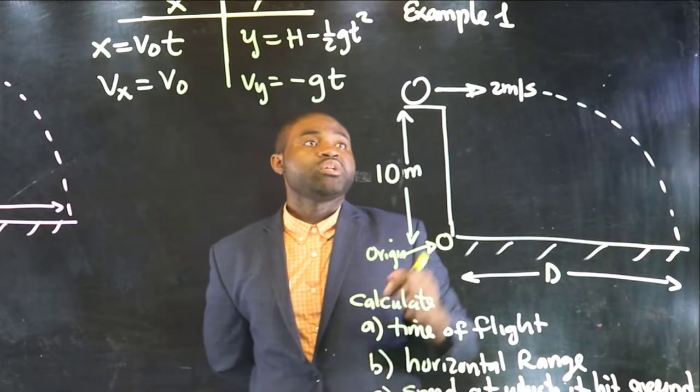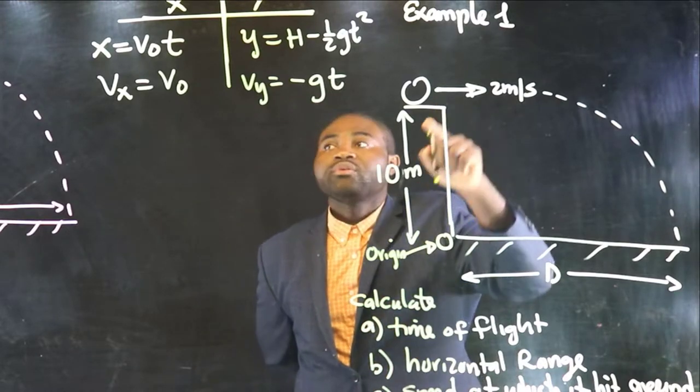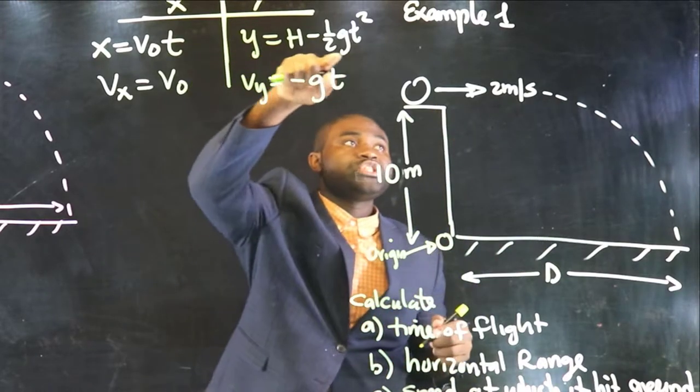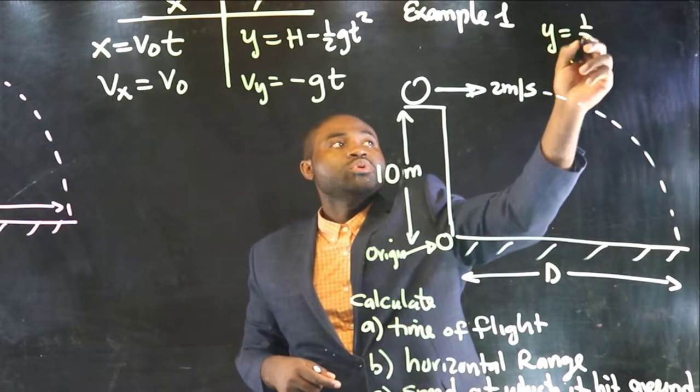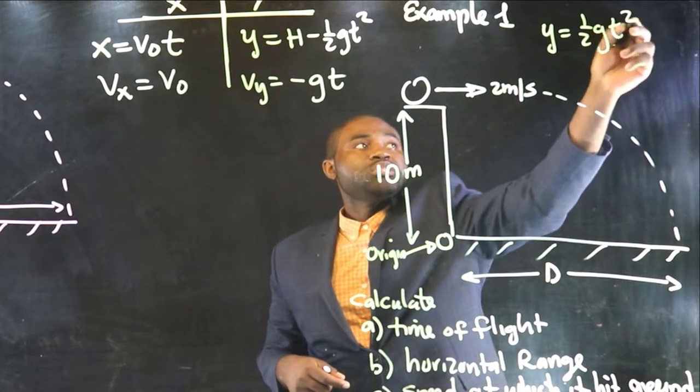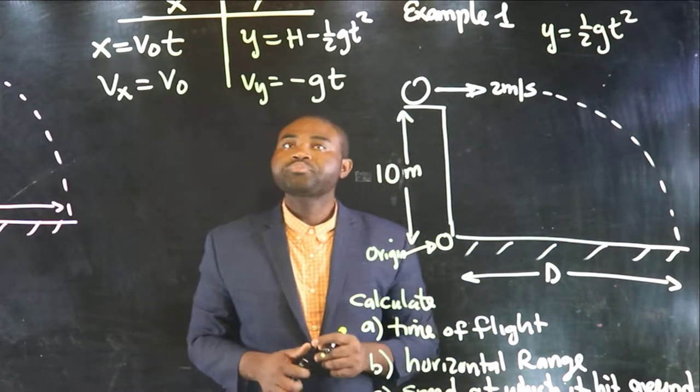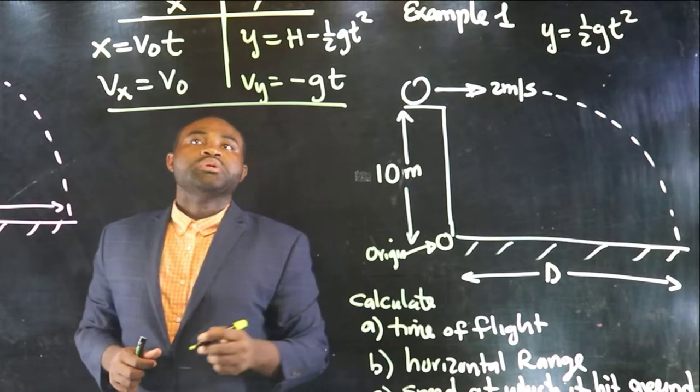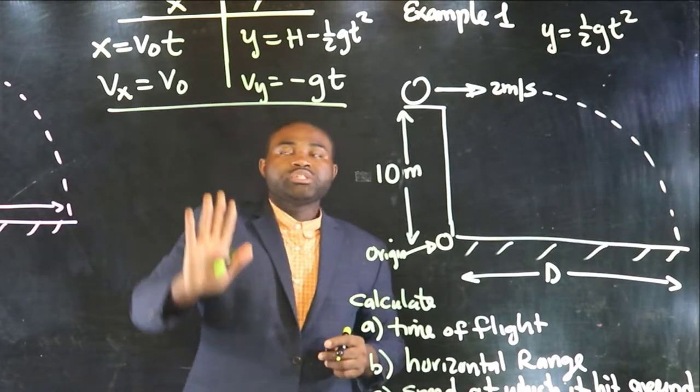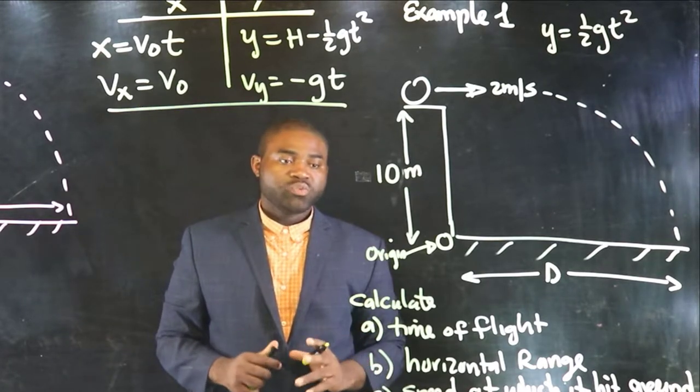If we assume that the origin is here, then this expression changes. In that case, it becomes y equal to one-half gt squared. So, this set of equations will give us everything that we need.